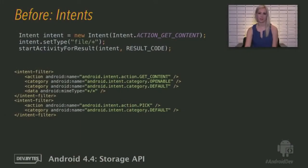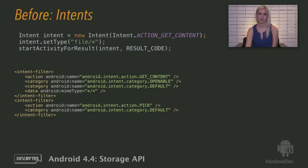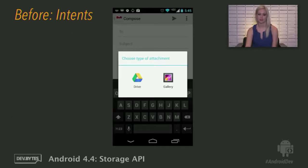Before KitKat, you may have seen or implemented something like this. You had Action Get Content or Action Pick, and you declared one or more intent filters in an activity in your manifest. You would pick one app, and you would get one file back in your original application.